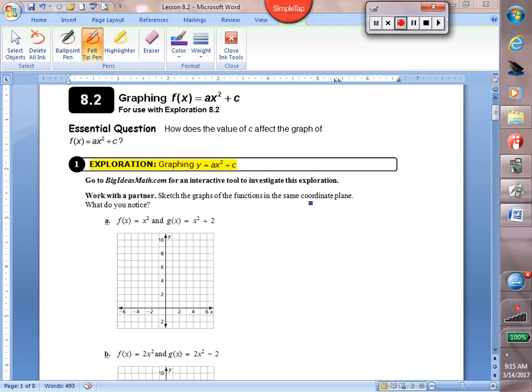Remember, quadratic function means the highest exponent of the variable is a 2. And when we graph our quadratic functions, we're going to get a parabola, which is the U-shaped graph that we saw in section 8.1. In section 8.1, we focused on graphing quadratic functions of the form ax squared. The a value we discovered, if it was larger than 1, we noticed it made our graph vertically stretch.